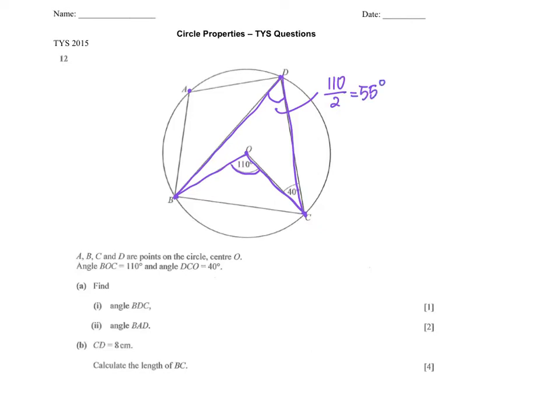On top of that, we know OB is a radius and OC is a radius. Hence, we can find the base angles of the isosceles triangle. Now let's take a look at our question. Angle DOC is given to be 40 degrees, and there is some additional information given.